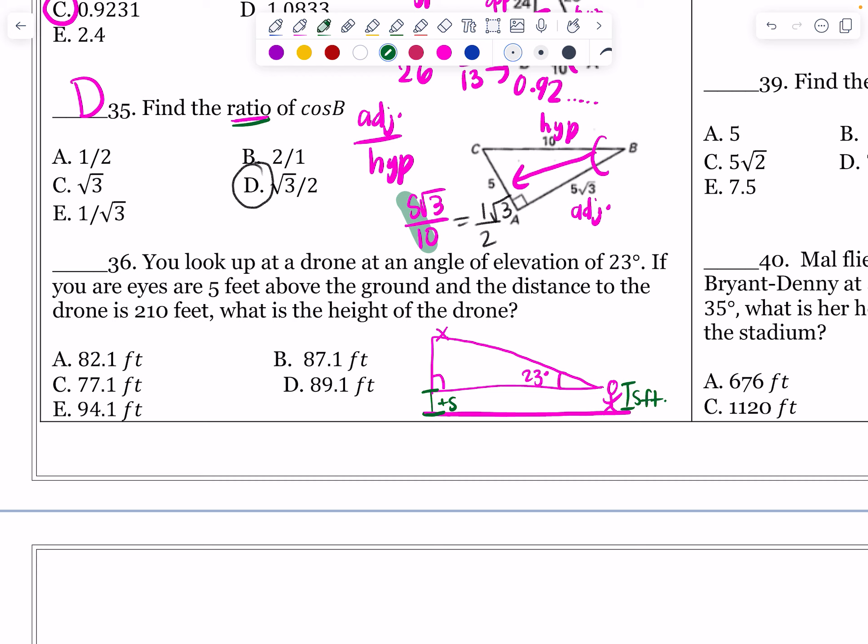What is in the ground? The distance to the drone is 210 feet. So from your eyes to the drone is what it says. If your eyes are five feet above the ground and the distance to the drone from your eyes to the drone is 210, there's my hypotenuse. What is the height of the drone? So we're looking for this piece right here, which I'm going to call X.